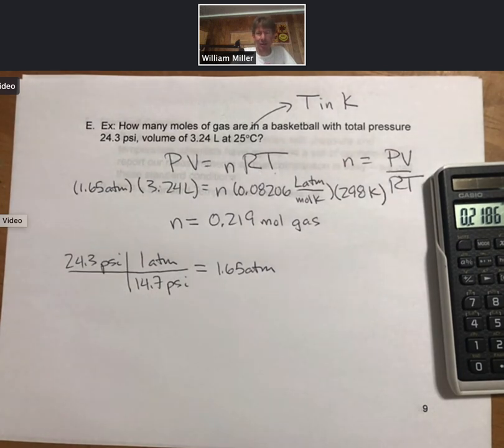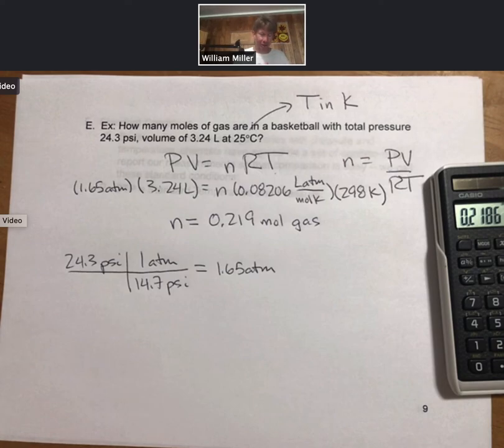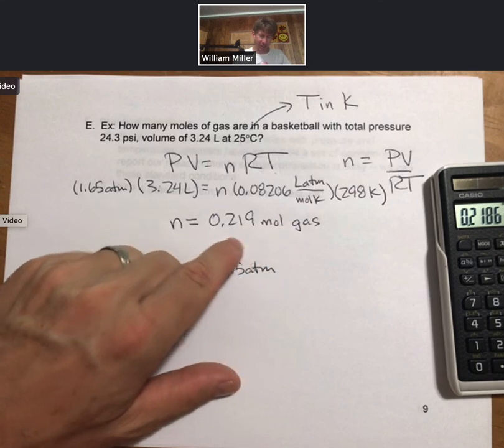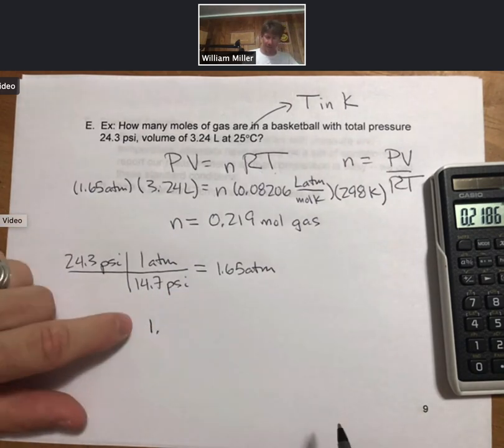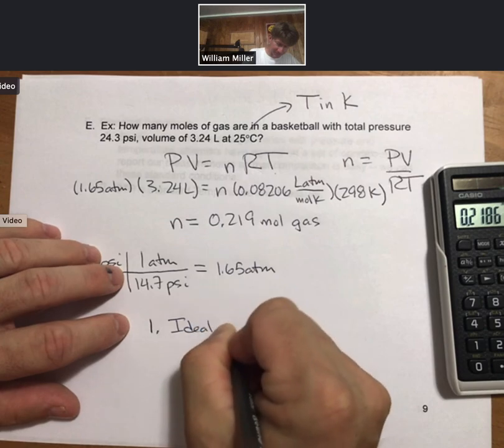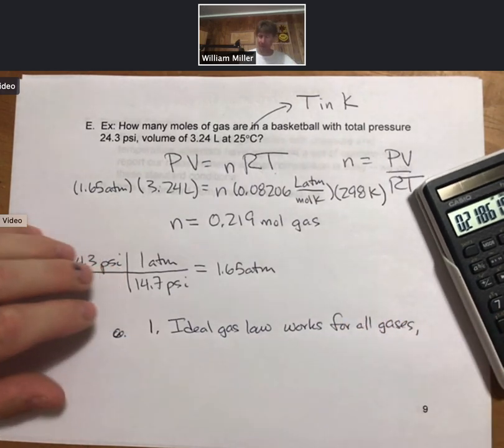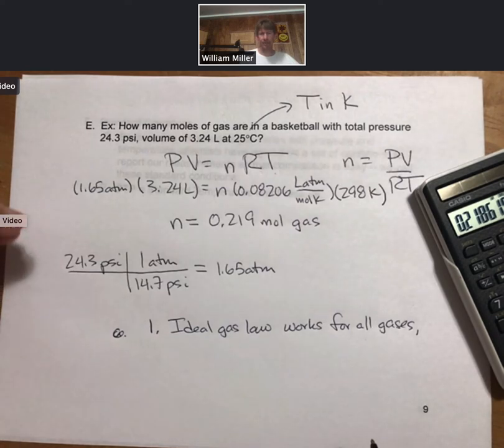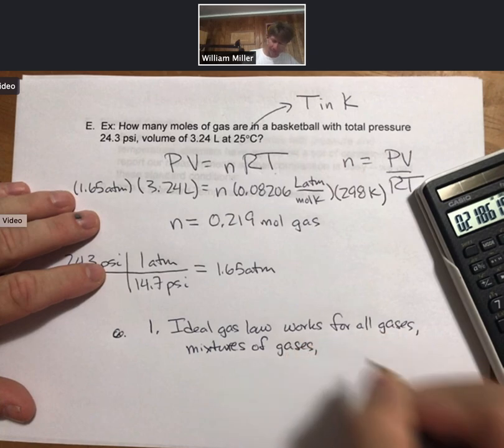And a couple of things I'll point out at this point. So first off we're talking about a basketball and the gas in there is usually air, and air is a mixture of gases. So inside this basketball, whatever gases are in air, the volume under these conditions, all of those gases will add up to 0.219 moles of gas. So note one, the ideal gas law works for all gases, works for mixtures of gases and pure gases.